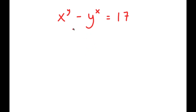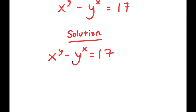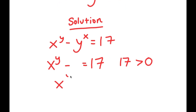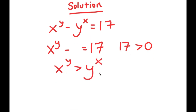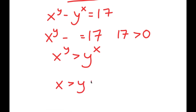In this problem, I have x to the power of y minus y to the power of x is equal to 17. To solve this problem, just by looking at this equation, notice how we have x to the power of y minus something is equal to 17, and 17 is greater than 0. This means x to the power of y is greater than y to the power of x, and this also must mean that x is greater than y, and y is greater than 0.